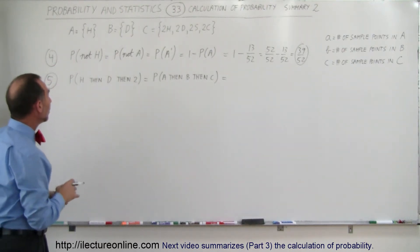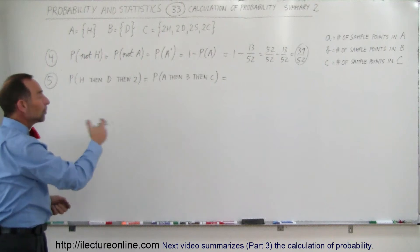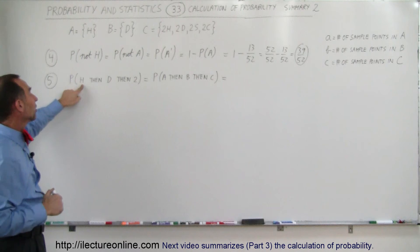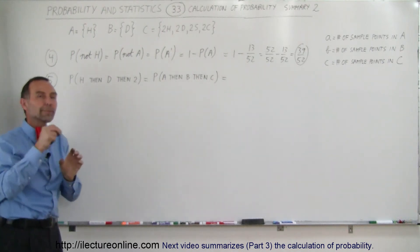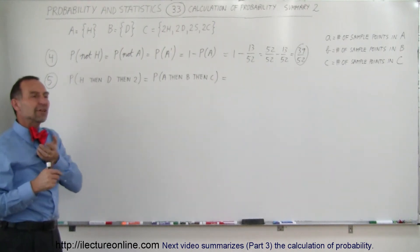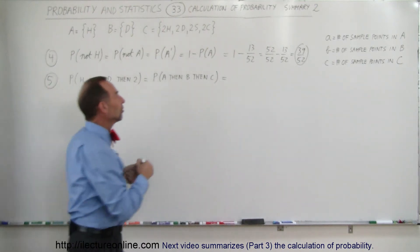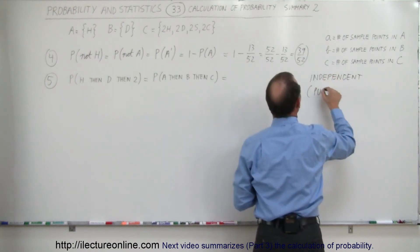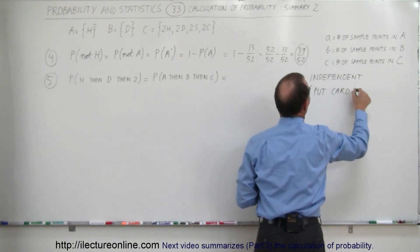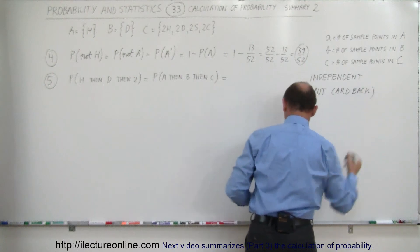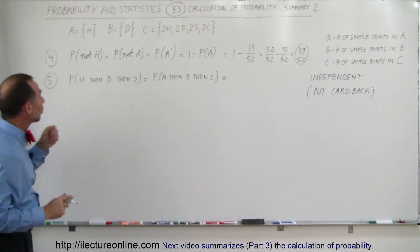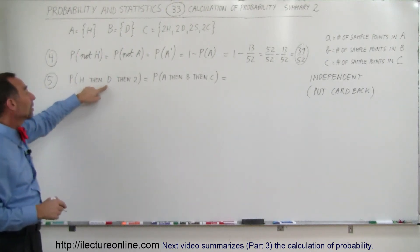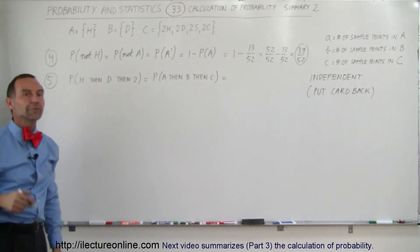The second one involves three subsequent things. We're going to pull a card and see what the probability is to get a heart, then put the card back. That means the events are independent — you put the card back after each pull. So we're going to pull three cards one at a time and put it back each time. What's the probability of getting a heart, then a diamond, then a 2?